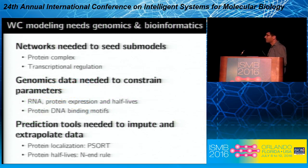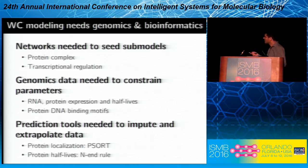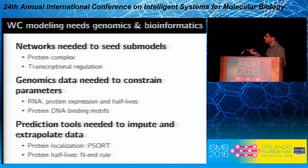The most obvious way in which genomics and bioinformatics feed into wholesale models is that we're using genomic data to constrain wholesale models — for example, using RNA-seq data to constrain parameters relating to transcription rates and RNA degradation rates. Second, we're using networks to seed submodels of individual pathways — particularly transcriptional regulatory networks inferred from RNA-seq experiments to build dynamical models of transcriptional regulation, and inferred protein complex networks to model protein complex formation.